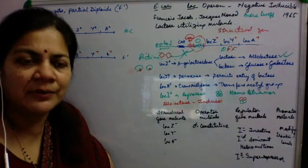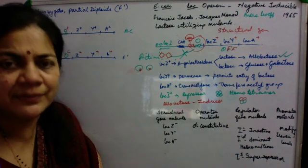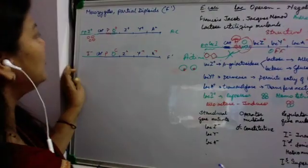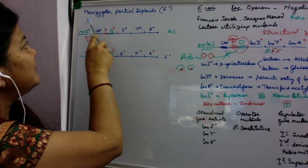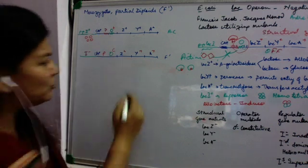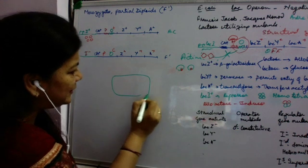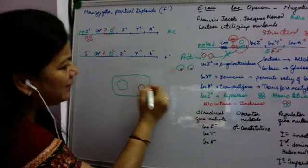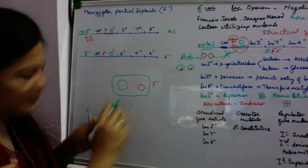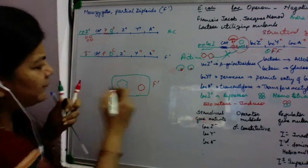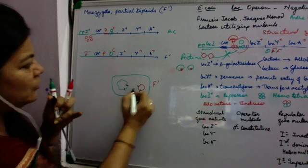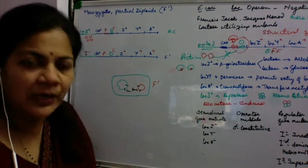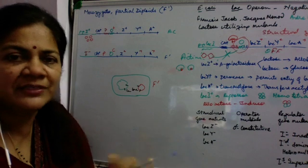For identifying the different facts about the Lac Operon, they utilized bacterial mutants. They also made vast use of merozygotes, or partial diploids. In these, if there is a bacterial cell with a bacterial chromosome and an F-prime plasmid, a portion of the bacterial chromosome is duplicated — so you have two Lac Operons — and therefore this is called a partial diploid. Using these partial diploids, they could establish some properties of the regulatory elements.